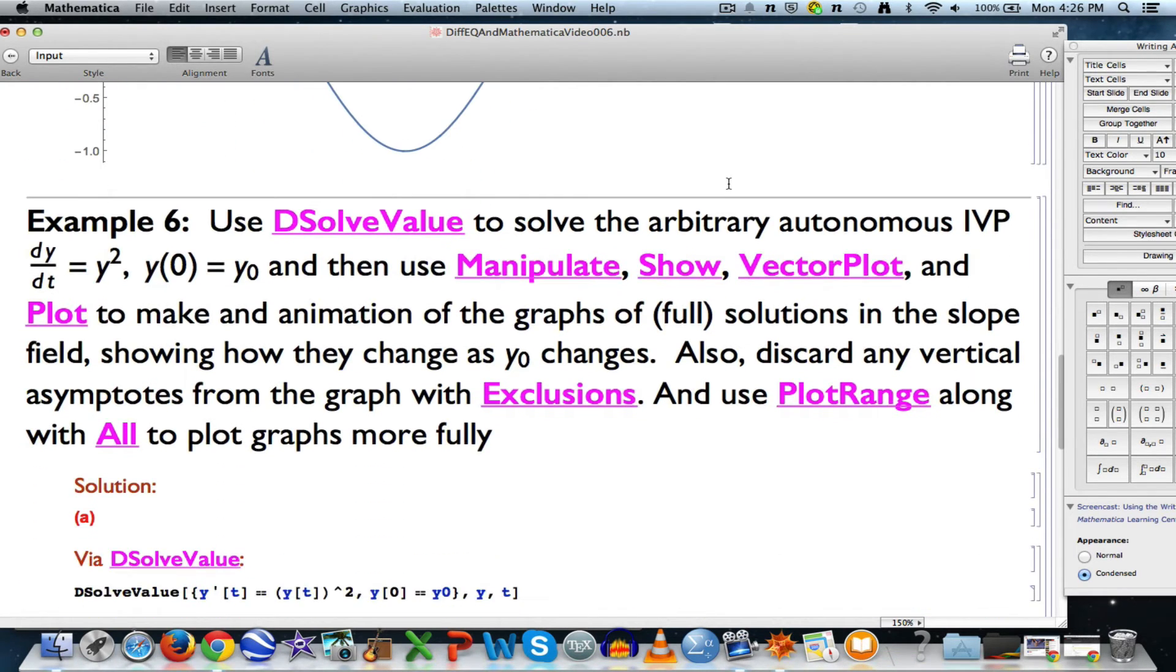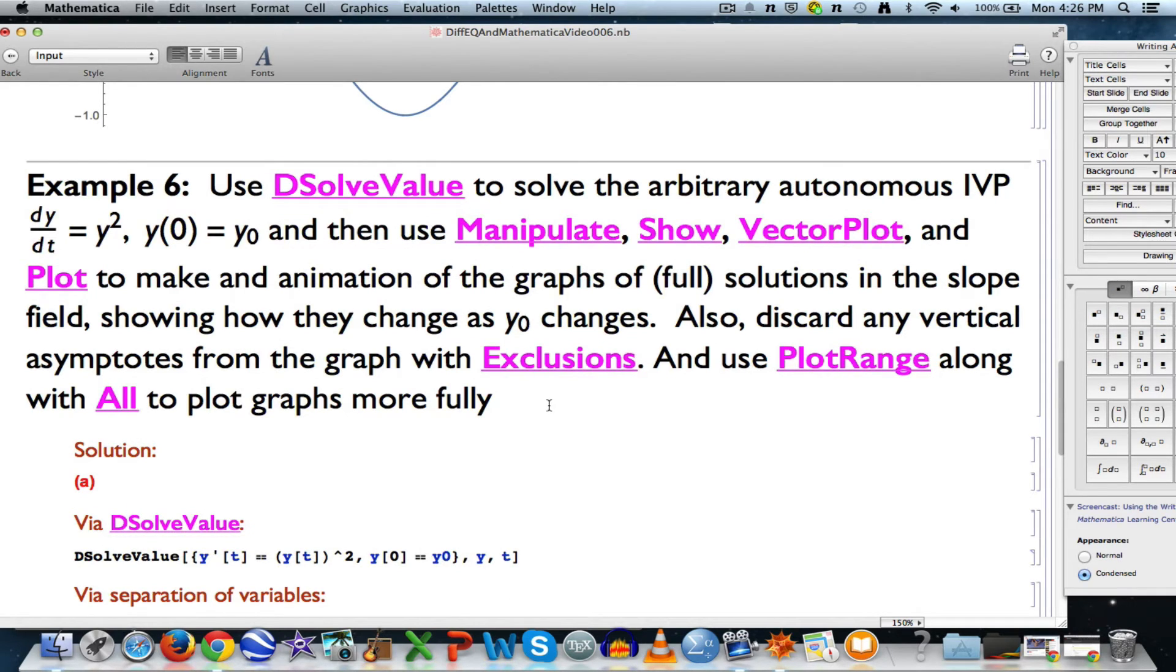We want to use DSolveValue in the way we just did. For this arbitrary, well, this fixed but arbitrary initial value problem, it's still an autonomous equation, because the right-hand side still just depends on y, so again, the slope field is going to be constant along horizontal lines.